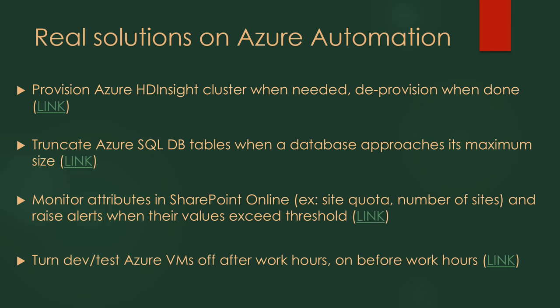In terms of what people are actually using Azure Automation for today: the biggest scenario is starting and stopping VMs. A lot of people have dev-test VMs in the cloud where during the day they're using them, but at night they're just paying for compute they're not using. A very simple runbook goes on a schedule, turns them off at night and on in the morning. A lot of companies save a boatload of money doing this — it's reliable because there's no single person or machine responsible for remembering to do it. Other scenarios include Azure HDInsight — only having it created when you need it and deprovisioned when you don't. Some people manage their SQL servers so that if the server approaches maximum load, they clean up old records or logs. And SharePoint Online monitoring — checking quotas and thresholds, alerting engineers, and even doing automated remediation.